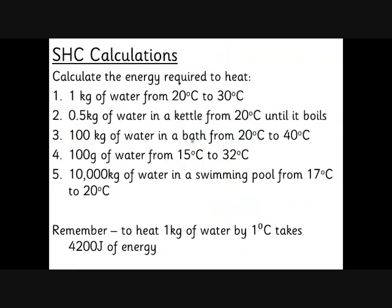This number is called the specific heat capacity of water. To heat up 1 kilogram of water from 20 degrees C to 30 degrees C — it's 4,200 to make it go up by 1 degree, but we're making it go up by 10, so it takes 10 times as much: 42,000 joules.